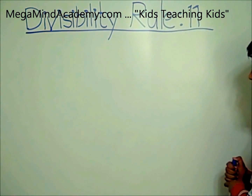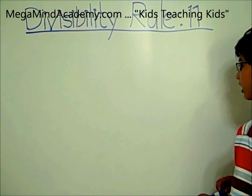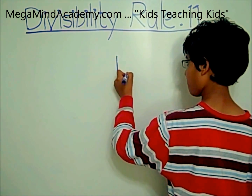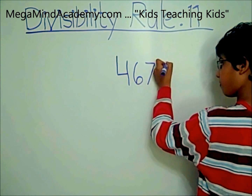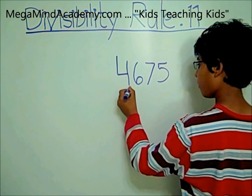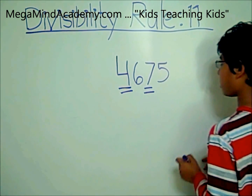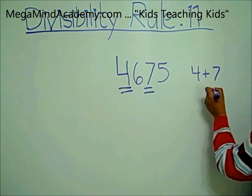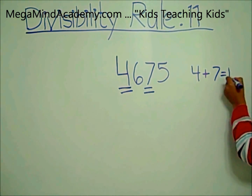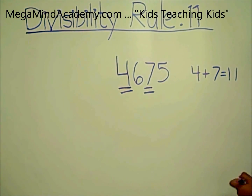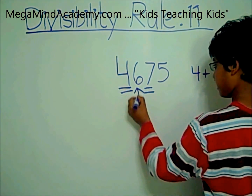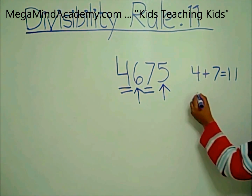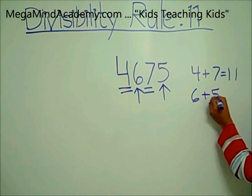Now let's look at another example. This time, let's say our number is 4,675. 4 and 7 are the alternate numbers, so you add them and it becomes 4 plus 7 which equals 11. Now you add up the other alternate digits which are 6 and 5. It becomes 6 plus 5 which equals 11.